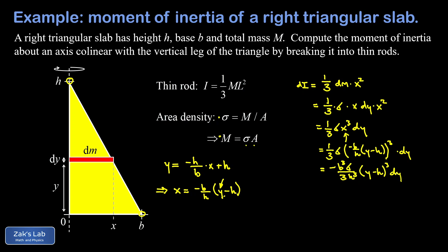Now we have the moment of inertia contribution of a thin rod written entirely in terms of a single variable y. So we can add all these up by integrating as y goes from zero to h.